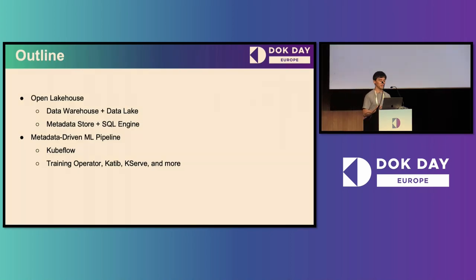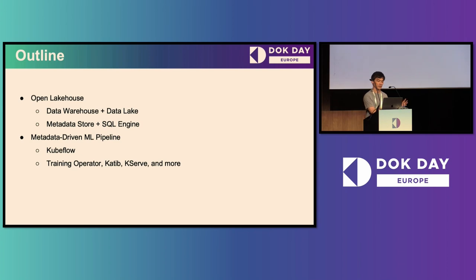Here is the agenda. We will cover two main topics that are very important for ML enablement. The first one is the open lakehouse, which has become a very trendy topic in recent years. It's the foundation of the ML platform we constructed. It combines the features of the data warehouse and data lake, and it's used by many ML personas, like data analysts, feature engineers, and data scientists.